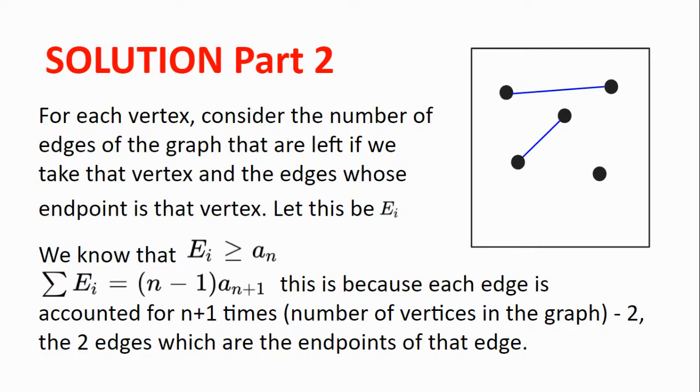We also know that the sum of all the E_i's, so the sum of all the numbers, is equal to (n-1) multiplied by a_{n+1}. This is because each edge is accounted for n+1 times, the number of vertices in the graph, minus 2, the 2 edges which are the endpoints of that edge.